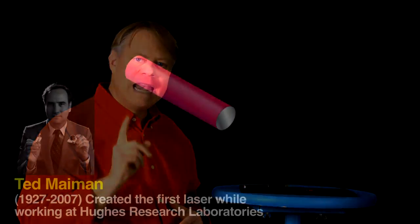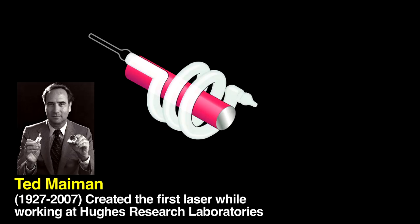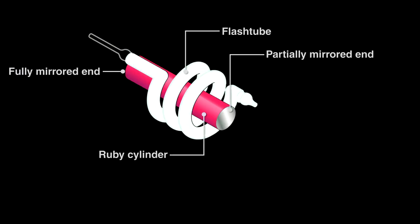In 1960, Ted Maiman demonstrated the first laser by taking a cylinder of ruby and surrounding it with a xenon arc flash lamp used in aerial photography. An intense burst of light from the lamp initiates lasing. To see how it works, let's look at what happens with a weaker lamp.